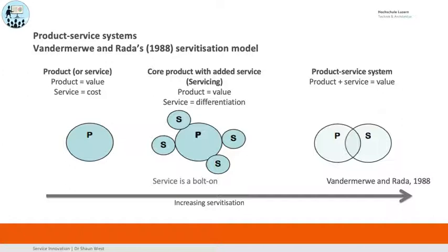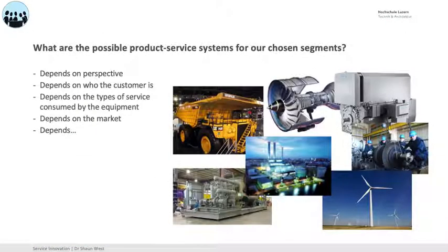A product service system is where we have a product with services around it, and they're pretty much integrated — we find it hard to find out where the service starts and stops. That's really my aim here, and I want you to be able to describe that. These are the types of things we'll be looking at: big industrial equipment, although we'll often use well-known examples to innovate on. But this is where I want us to be able to take it.